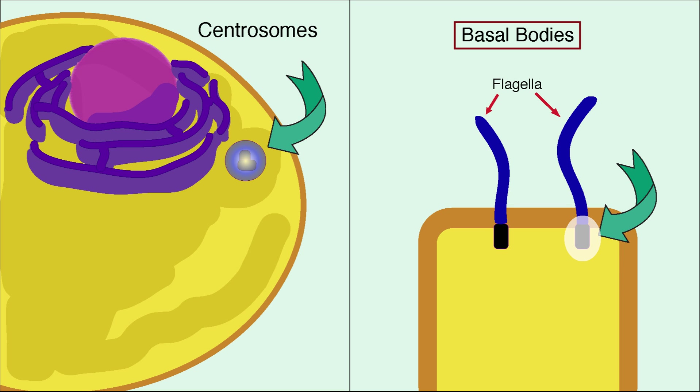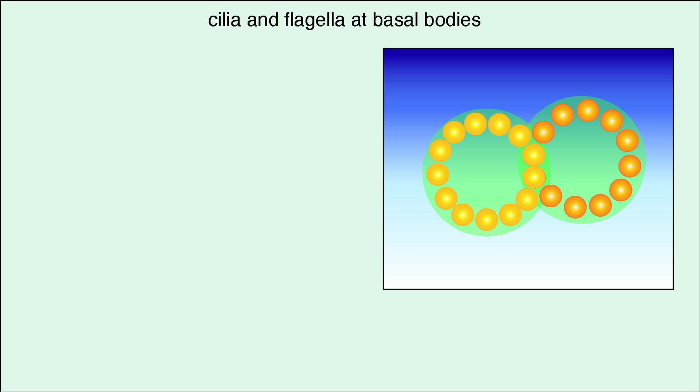Basal bodies are the nucleation site for cilia and flagella. Here, microtubules are assembled and arranged in a very specific pattern. First, two microtubules, one with 13 protofilaments and another with 10 or 11 protofilaments, link together to form a doublet.